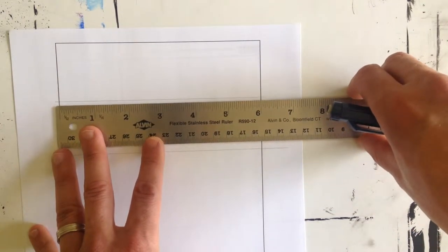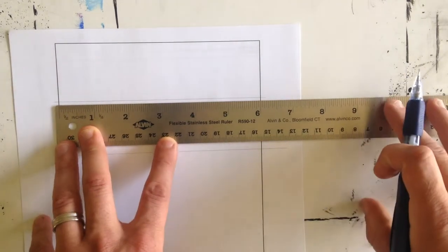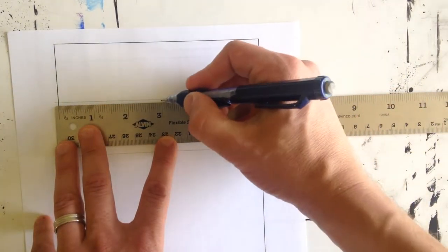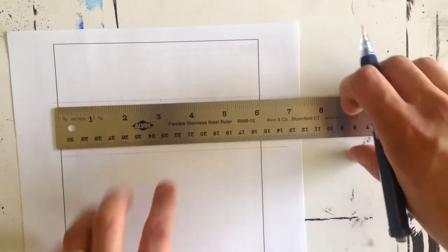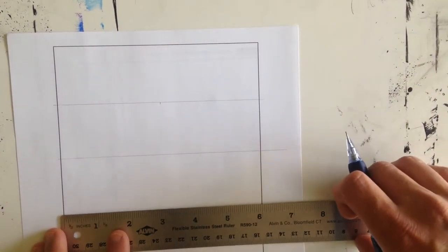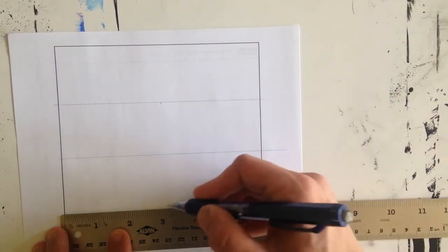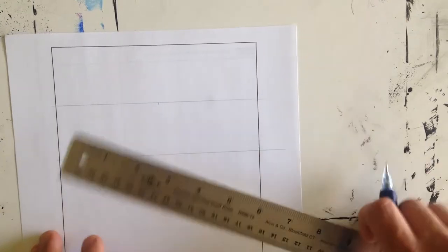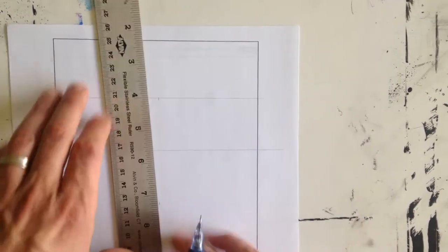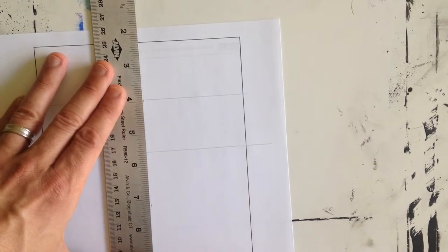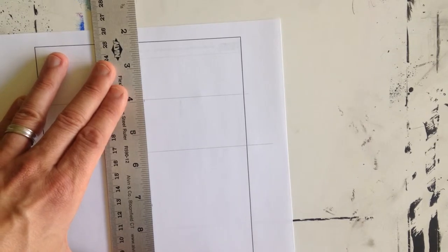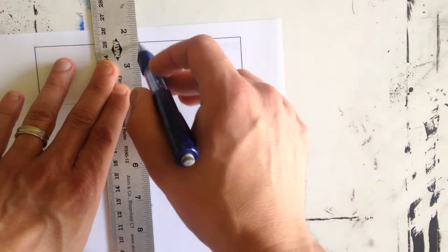So then I want to find the center point. This is 6 inches across and half of 6 is 3. So I'm going to make a little mark here and I'm going to move down and make a little mark here. Then I'm just going to connect the dots. I line my ruler up really well with this and just bring that down. That's my center point.